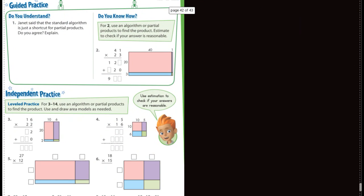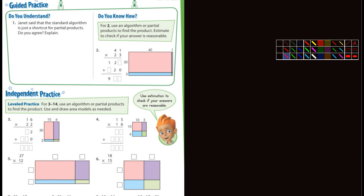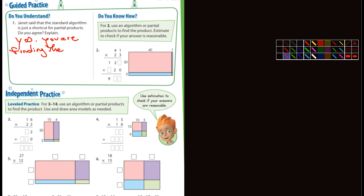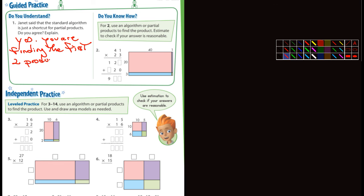Looking at the guided practice here — Janet said that the standard algorithm is just a shortcut for partial products. Yes, I agree. You are finding the first two products and adding them in the standard algorithm, so yeah, it is kind of a shortcut.